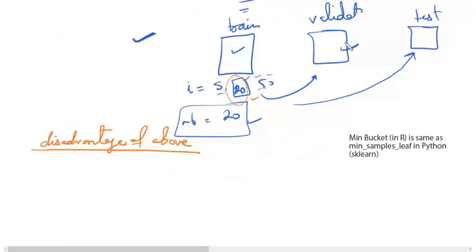The first disadvantage of this method is that you are dividing your data into three parts and hence the amount of data that remains with you for training the model considerably reduces in size. Hence building a good model with limited amount of data becomes very difficult. So the first point is limited data left for training.